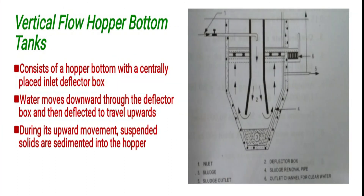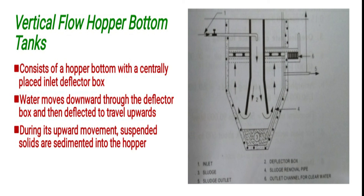The last type is vertical flow hopper bottom tanks. It consists of a hopper-shaped bottom with a centrally placed inlet deflector box. Water moves downward through the deflector box and is then deflected to travel upwards.